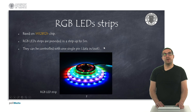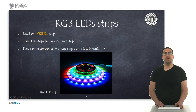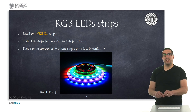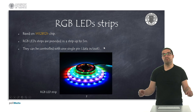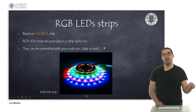Also, for color LEDs, the RGB LED strips are a very interesting option if you want to provide different kinds of illumination for your project. They are based on the WS2812B chip and are provided as a strip, connected one after another, and they can be up to five meters long. The main advantage is that they can be controlled with just one digital pin, so with one digital pin you can generate a lot of colors with your LED strip.